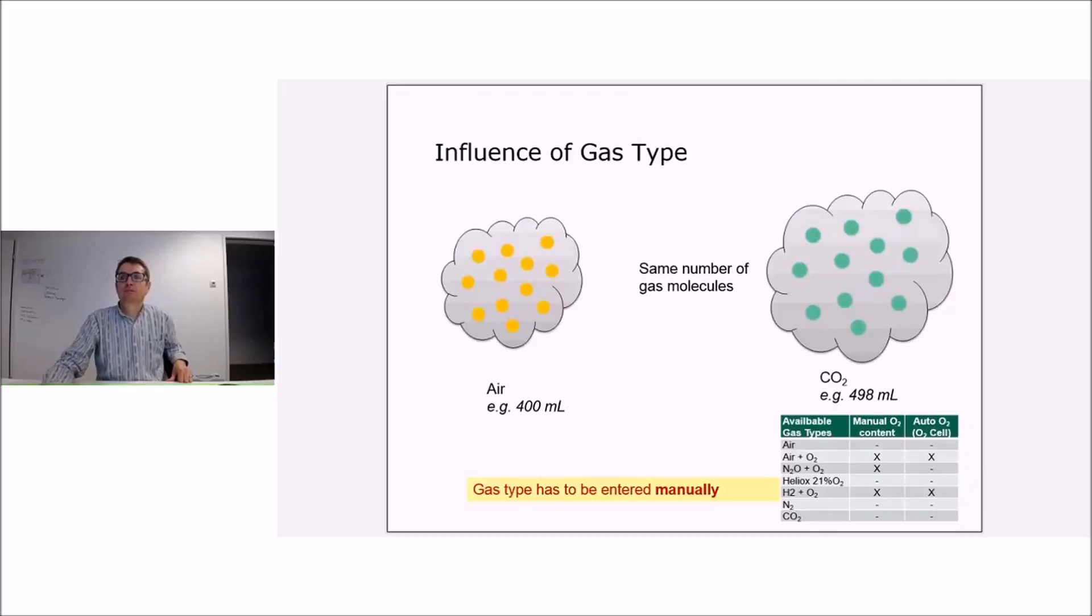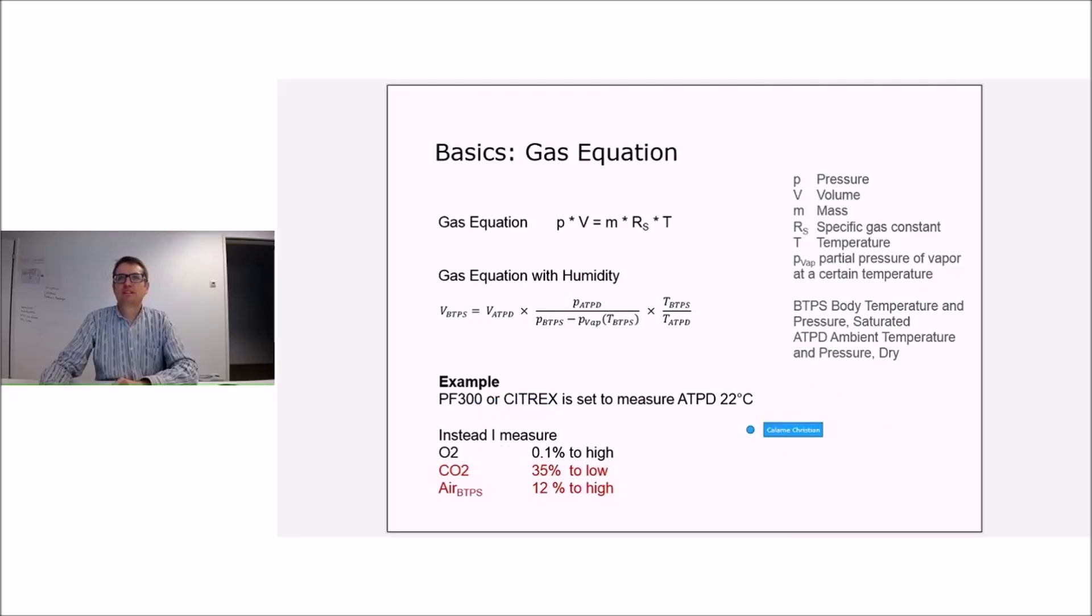And now we have the gas type. You have to dial in the gas type manually, but we've gone through that already. You only have air or air plus oxygen, so you're in this world. Since people are also using it for anesthesia machines, they have all kinds of crazy stuff. I have a PF300 which is set to ATPD 22 degrees Celsius. And if I measure pure oxygen instead, I'm just 0.1 percent too high. If I measure CO2 instead, I'm 35 percent off. If I measure in another gas standard, I'm 12 percent off. So this is just to give an example on the effects which are described by the gas equation.